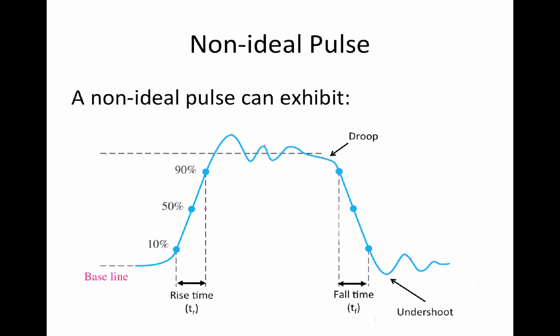Stray inductive and capacitive effects can produce overshoot and ringing. Stray capacitive and circuit resistance can cause droop due to the formation of RC circuits with a low time constant.